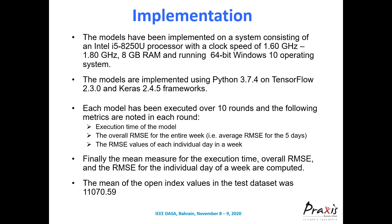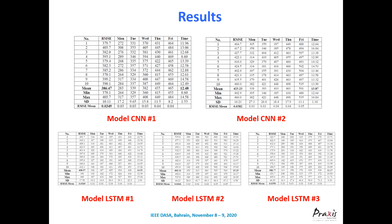The models were implemented on a system with an Intel Core i5-8250U processor at 1.60–1.80 GHz, 8 GB RAM, running 64-bit Windows 10. The implementation used Python 3.7.4, TensorFlow 2.3.0, and Keras 2.4.5. Each model was executed over 10 rounds and their mean performance taken in terms of execution speed, overall RMSE for the entire test period, and RMSE for each individual week. The mean of the open index value — 10070.59 — was used as the denominator for the normalized RMSE metric.